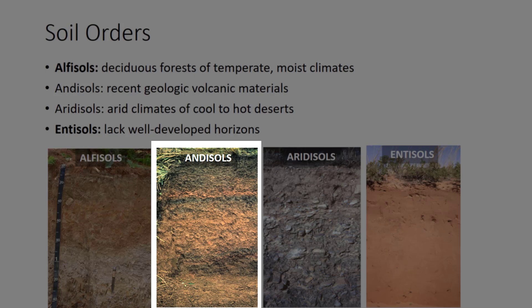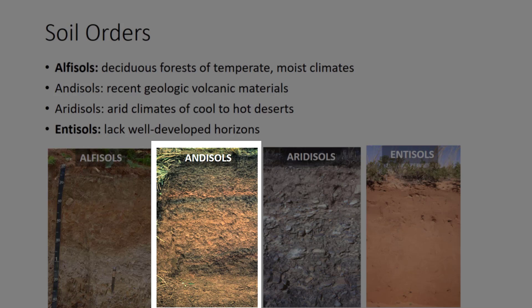Andisols form in geologically recent volcanic materials. The parent materials are weathered particles of volcanic glass, which provide a very distinctive soil. Ando means black. The soil is lightweight, typically dark-colored, high in organic matter, easy to till with a high water-holding capacity. These also make good agricultural soils and make up about 2% of U.S. soils, mostly in the Pacific Northwest, Hawaii, and Alaska.